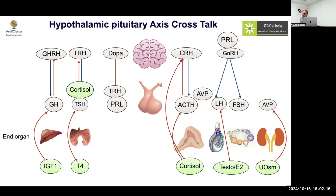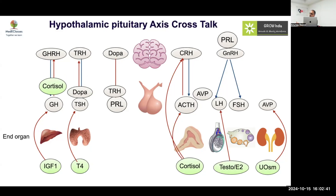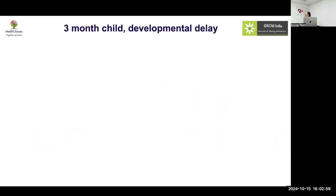Cortisol inhibits TSH — we all know that. So in Cushing syndrome you may see a low TSH; don't mistake it for central hypothyroidism. In non-thyroidal illness, cortisol is high and TSH will be low. If you have low TSH with normal or low T4, get a cortisol: high cortisol suggests non-thyroidal illness; low cortisol suggests multiple pituitary hormone deficiency. Cortisol also inhibits growth hormone, so do not do a growth hormone stimulation test in Cushing syndrome.